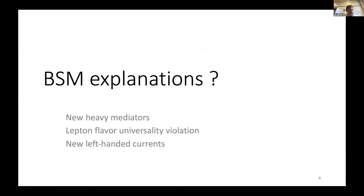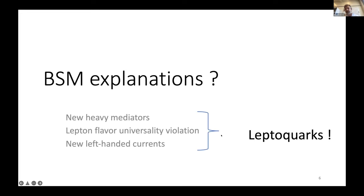Some explanations require new heavy mediators to account for differences between electrons, muons, and taus. You want something that can violate lepton flavor universality, and many of these anomalies, when put together, start pointing toward left-handed currents — Standard Model-like currents, but new ones. One way to get all of this together is with a leptoquark, which is a favored explanation for many of these anomalies.